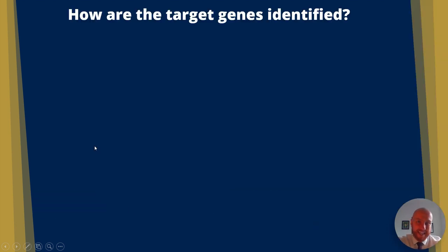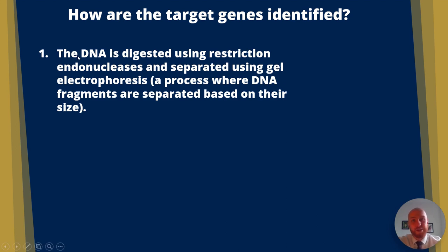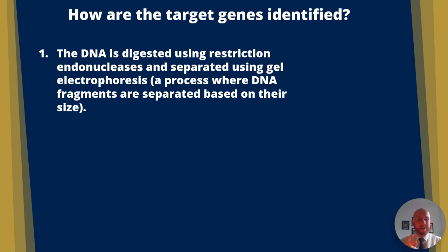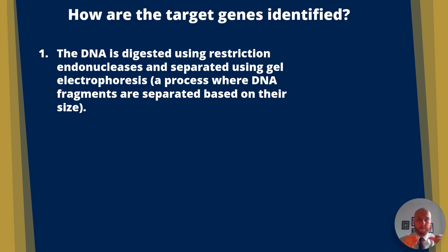How are the target genes identified? The DNA is digested using a restriction endonuclease. Restriction means it restricts at a certain point; endo means within — so within the genetic material — it's basically an enzyme that snips DNA at a specific point. The fragments are then separated using gel electrophoresis, where you have a slab of gel and the snipped DNA fragments move through it at different speeds depending on their size — think of it like chromatography, but here DNA fragments are separated based on how many bases are in them.